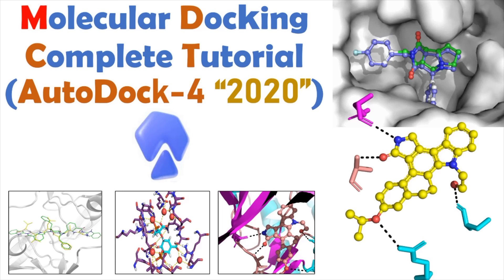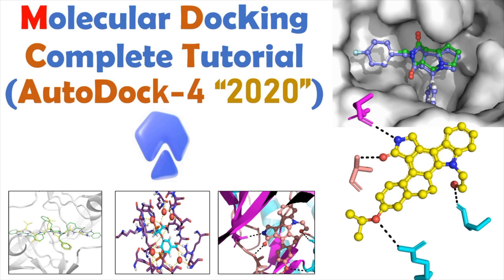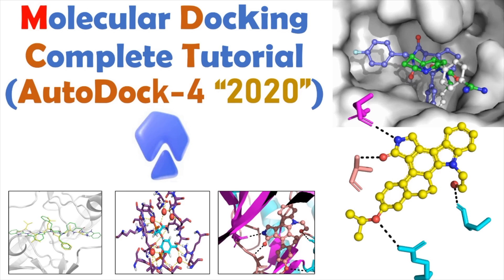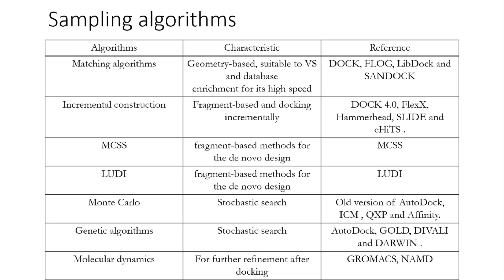The aim of molecular docking is to predict the ligand-receptor complex structure using computational methods. This prediction is achieved by two major interrelated steps: first, sampling the conformation of the ligand in the active site of the protein; then ranking those conformations via a scoring function. The sampling algorithm should reproduce the experimental binding mode, and the scoring function should rank it highest among all generated conformations.